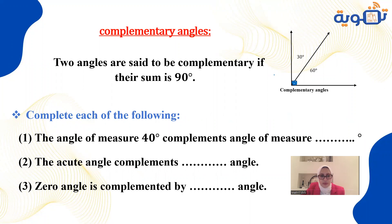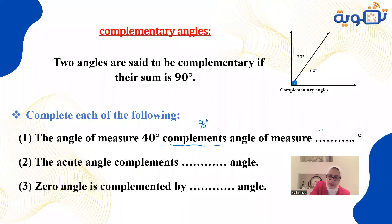To find the complement of an angle measuring 40 degrees: when you see the word 'complement,' think of 90 degrees, then calculate 90 minus 40, which gives 50 degrees.